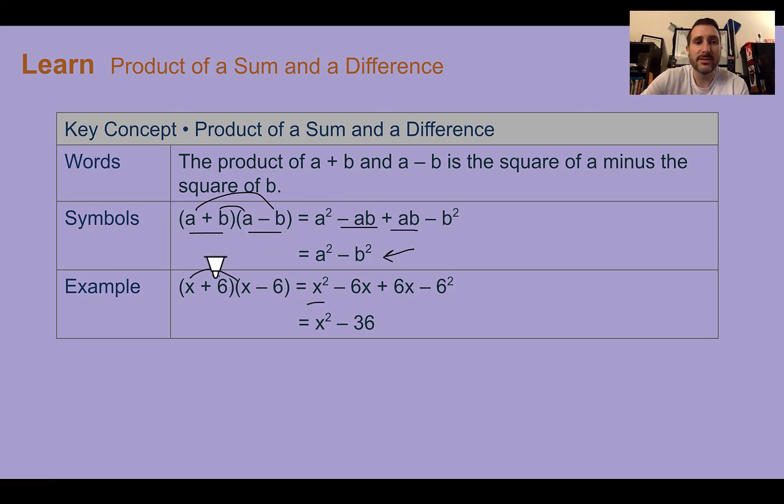So we can see this here. x times x is x², 6 times 6 is 36. But if we do positive 6 times x we get plus 6x, and negative 6 times x we get minus 6x. Negative 6 plus 6 is 0, it would disappear. So we're left with just our x² term and our final constant term.